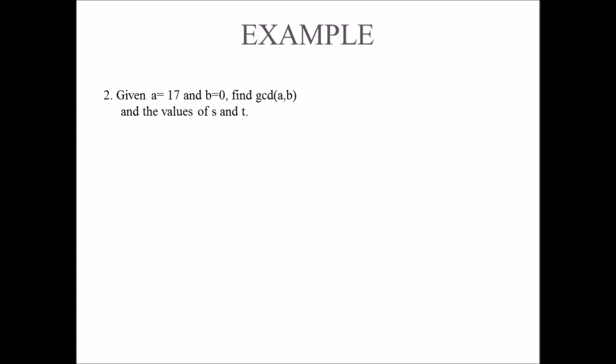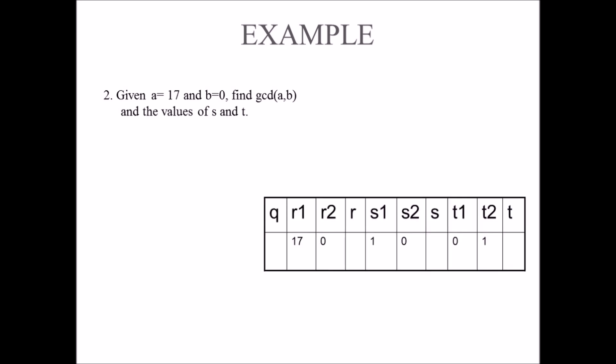Now let us consider another example. Given A equals 17 and B equals 0, find GCD of A and B. Initially we have R1 equals 17, R2 equals 0, S1 equals 1, S2 equals 0, T1 equals 0, T2 equals 1. The first value of R2 meets our condition; hence GCD of 17 and 0 equals R1 equals 17, S equals S1 equals 1, T equals T1 equals 0. We can verify: 1 times 17 plus 0 times 0 equals 17, which is GCD of 17 and 0.